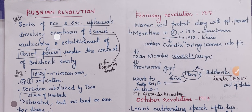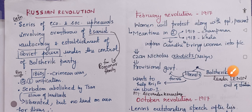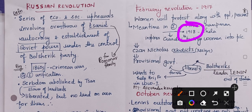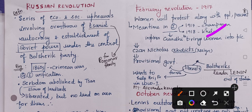Then what happened was the February Revolution of 1917. Women protested along with the people. Meanwhile, in India in 1917 and 1918, the Champaran Satyagraha and Kheda Satyagraha were happening. Seeing this February Revolution, Gandhi got inspired and he involved women also into the Indian movement.